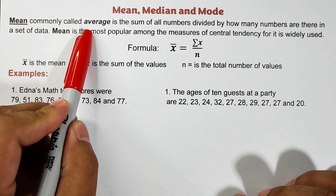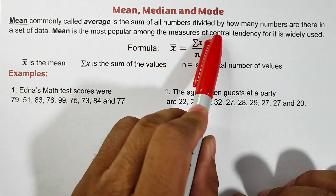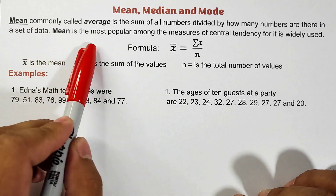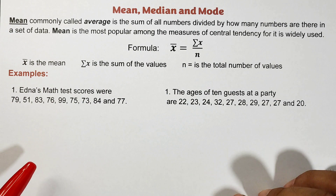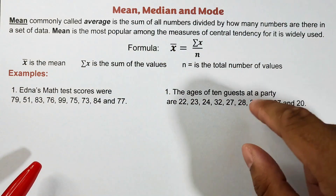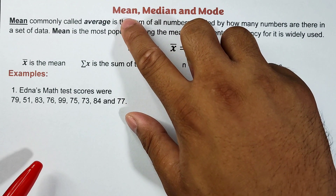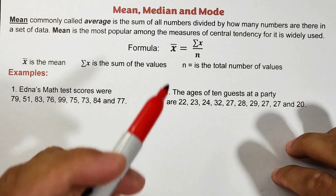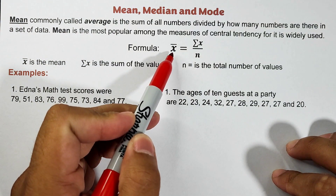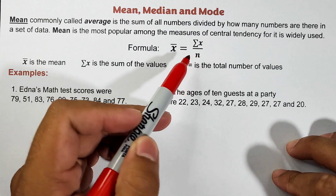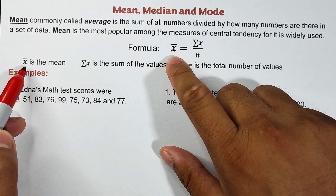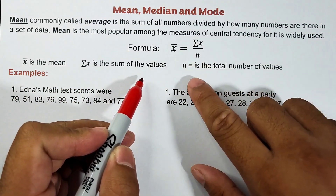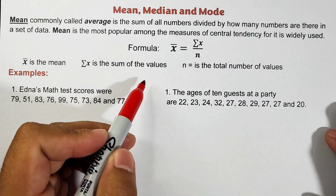Mean is commonly known as the average. The average is the sum of all numbers divided by how many numbers are there in a set of data. Mean is the most popular among the measures of central tendency — it is the most commonly used. The formula is: x̄ equals the summation of x over n, where x̄ is the mean, summation of x is the sum of the values, and n is the number of values in a given dataset.